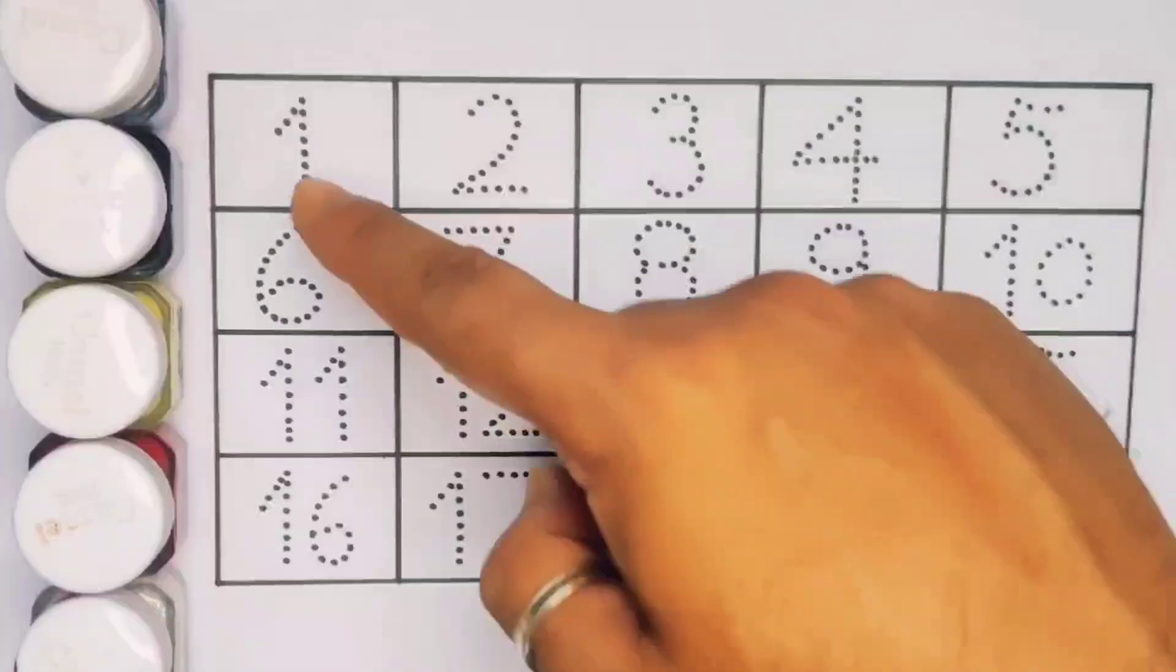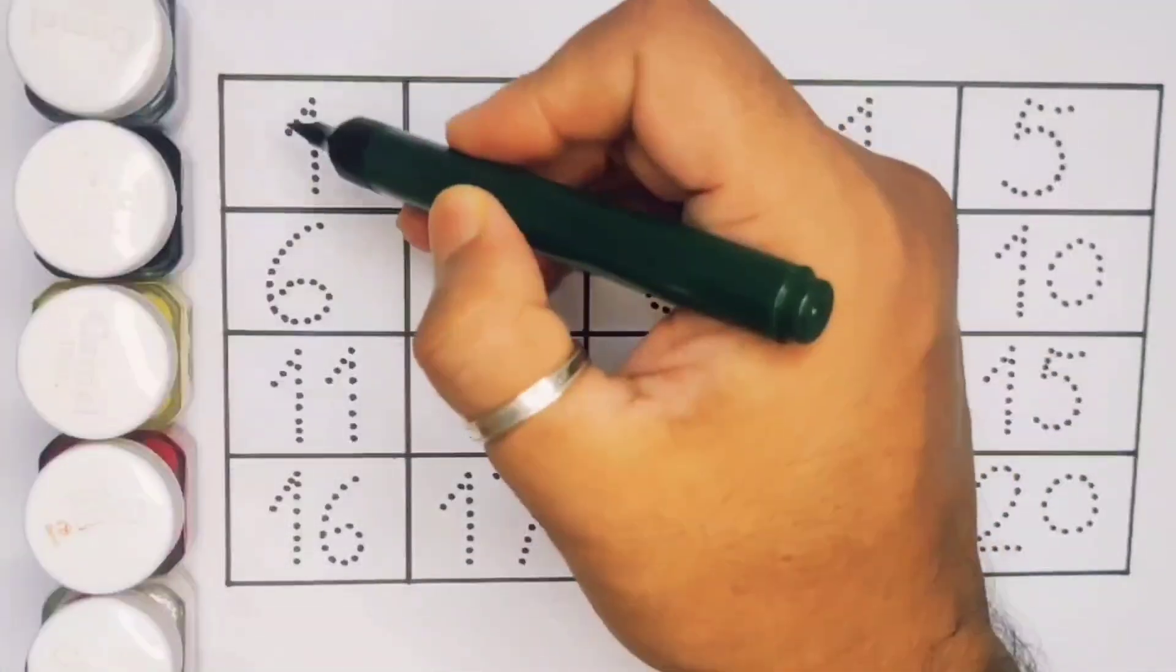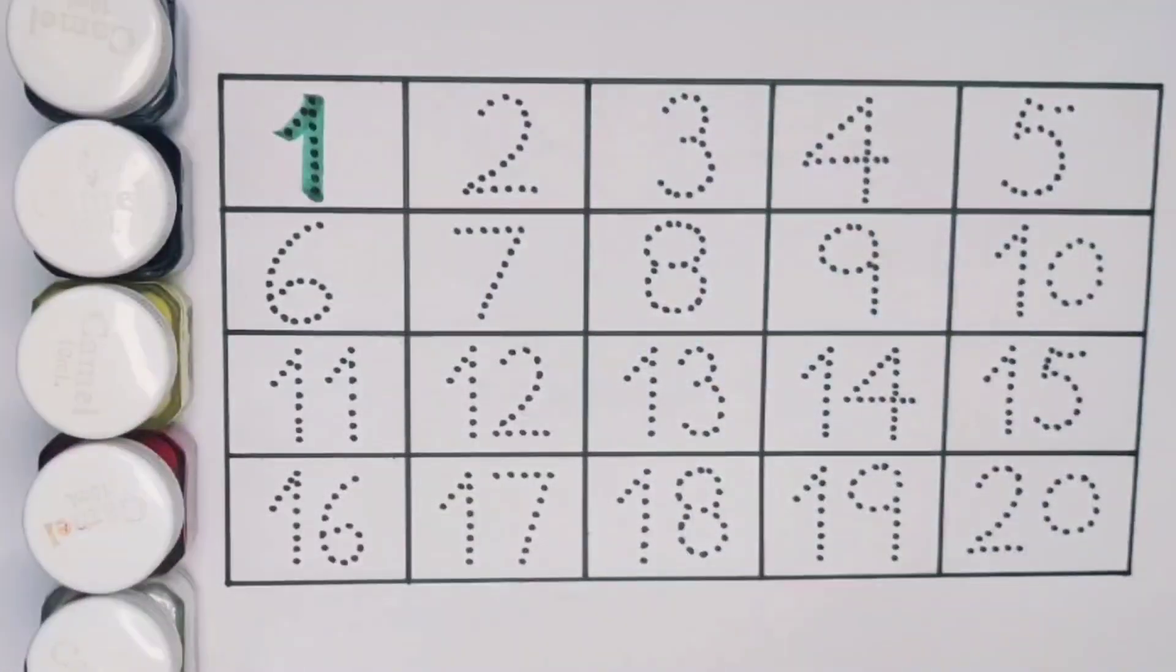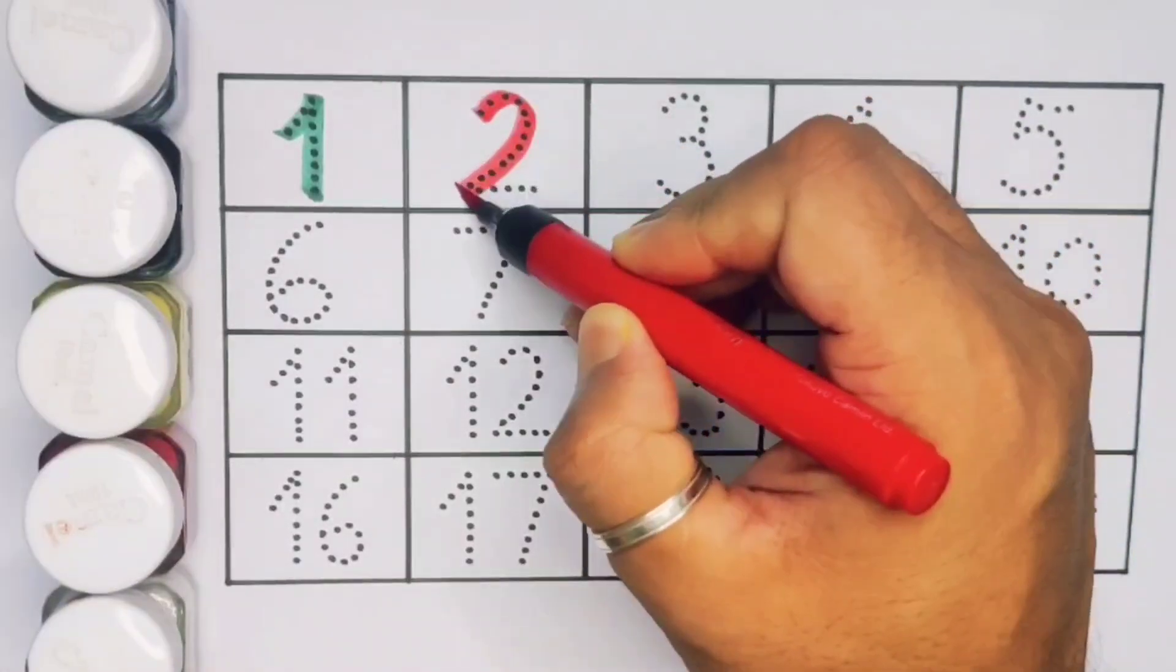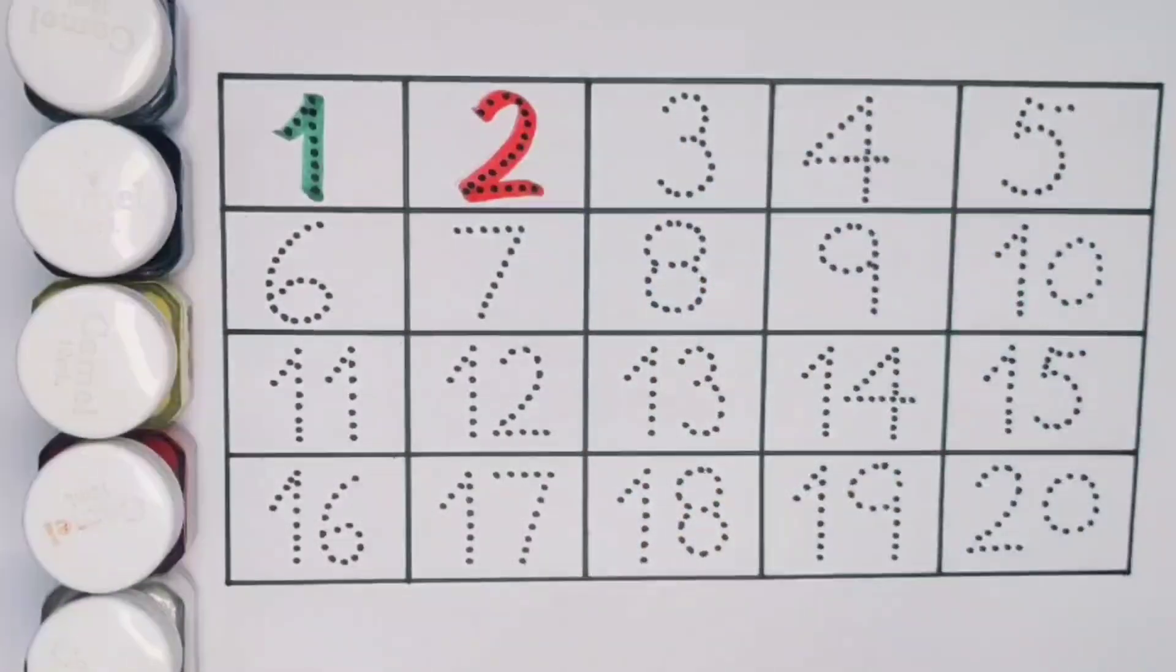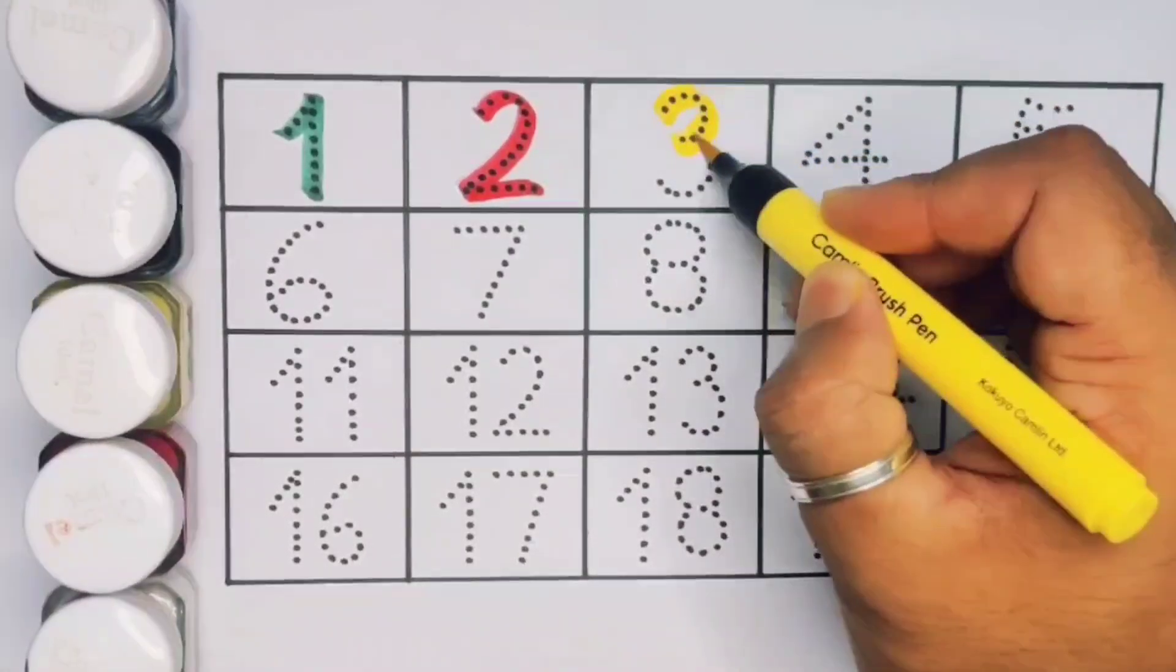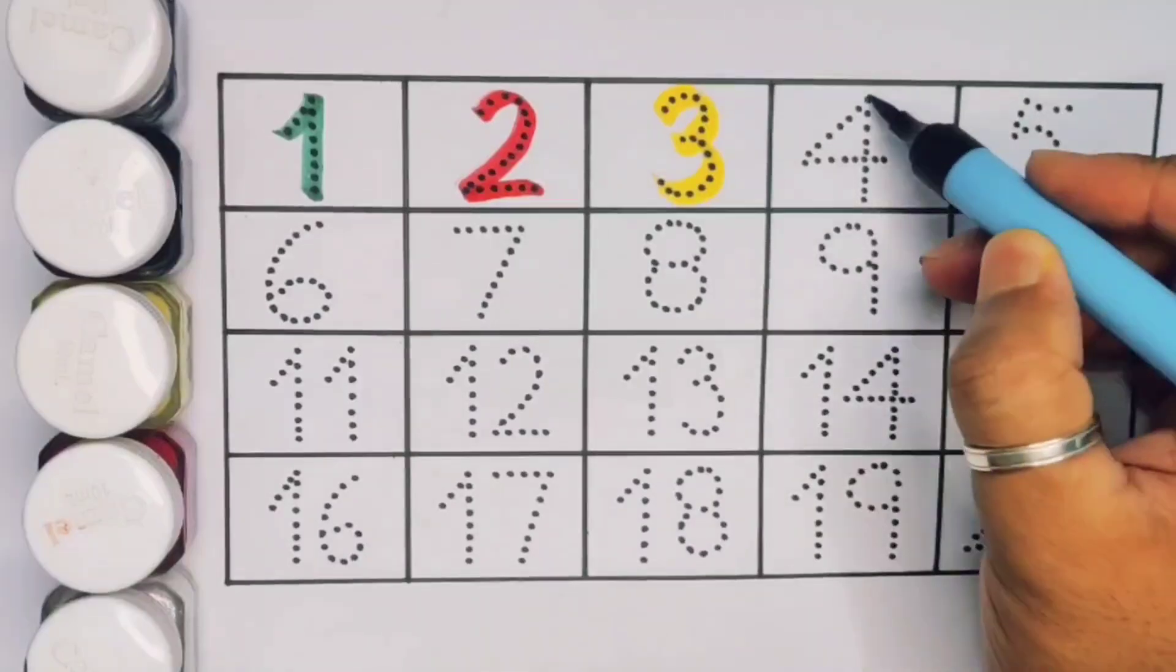Now let's learn the numbers counting 1 to 20. First 1, number 1. Next kids 2, number 2. Next 3, number 3. Next kids 4, number 4.